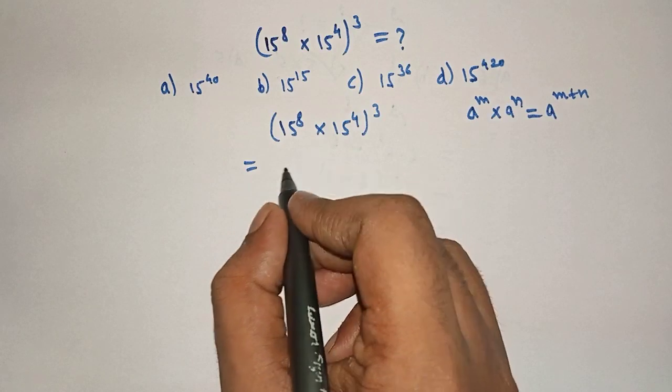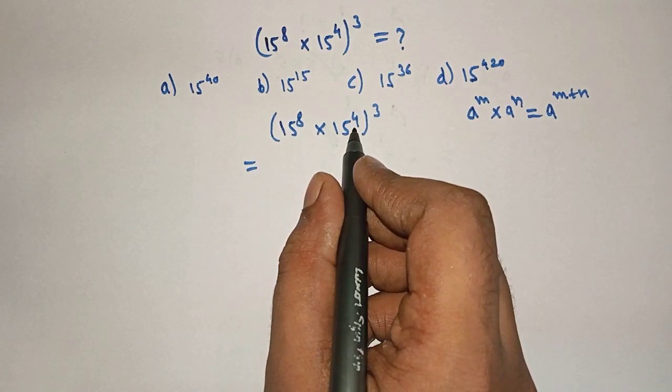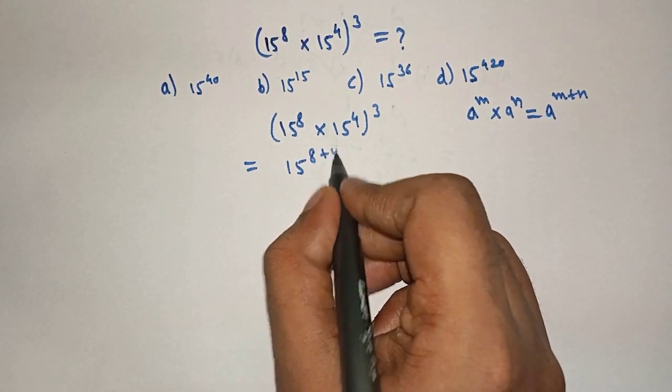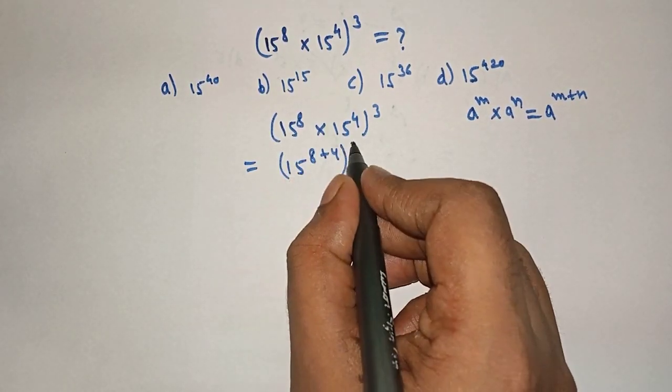A raised to M into A raised to N can be written as A raised to M plus N. Therefore, here, 15 raised to 8 into 15 raised to 4 can be written as 15 raised to 8 plus 4, the whole raised to 3.